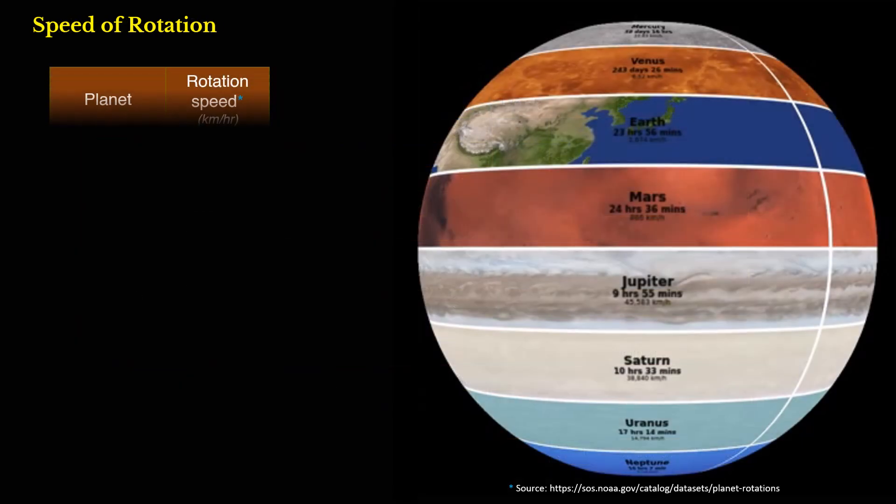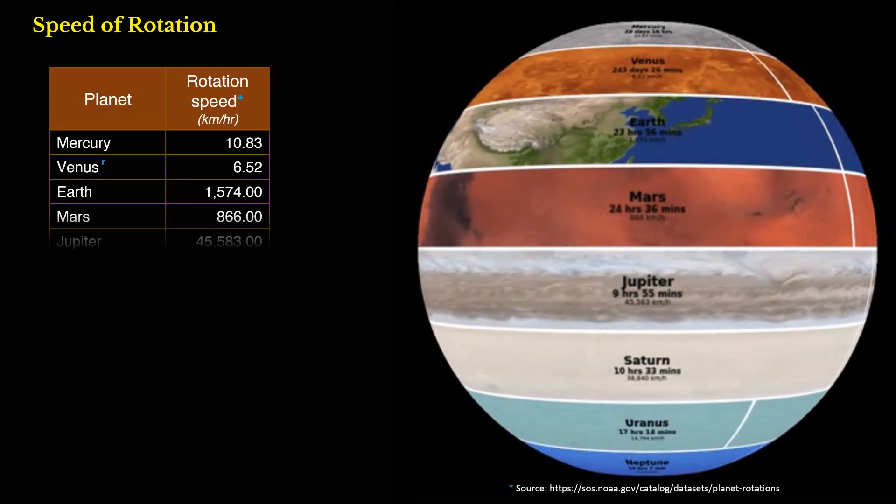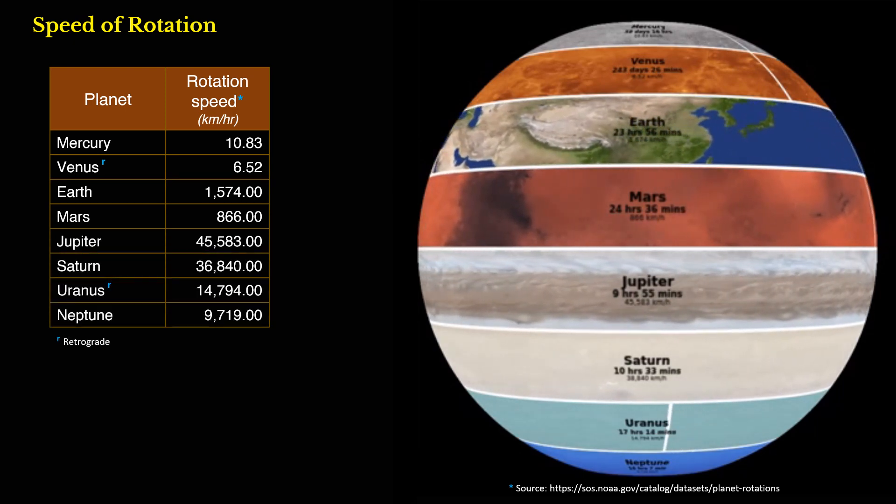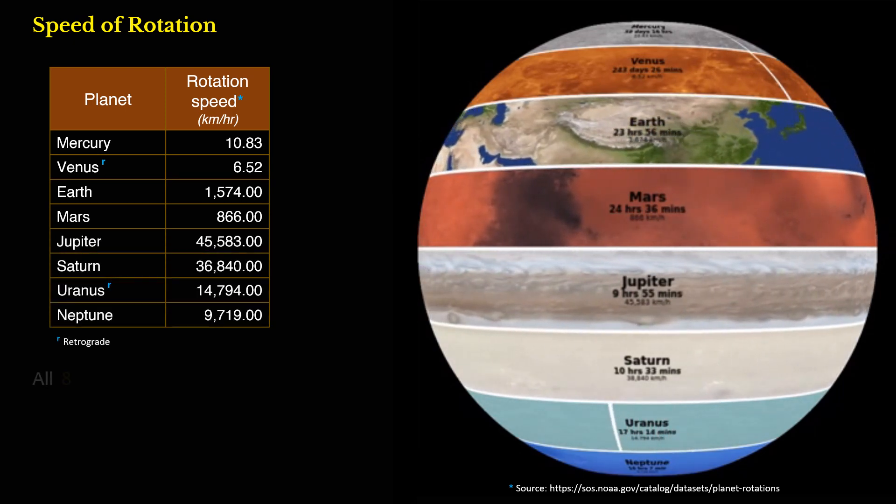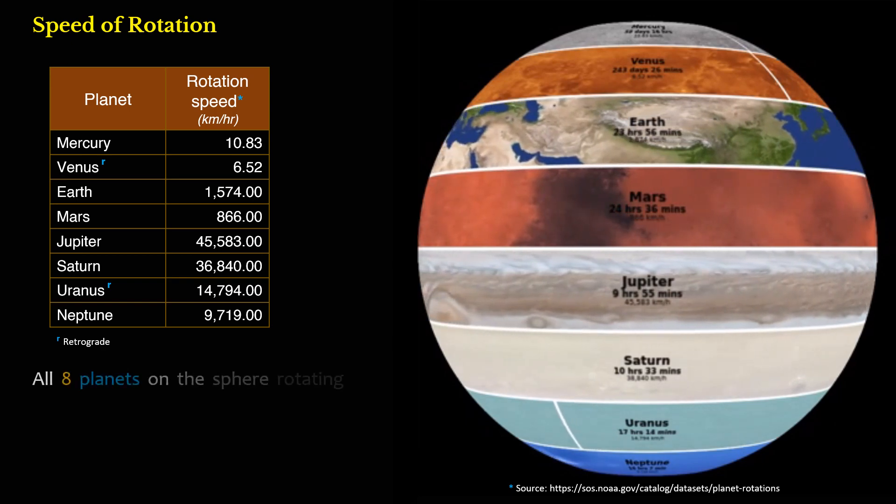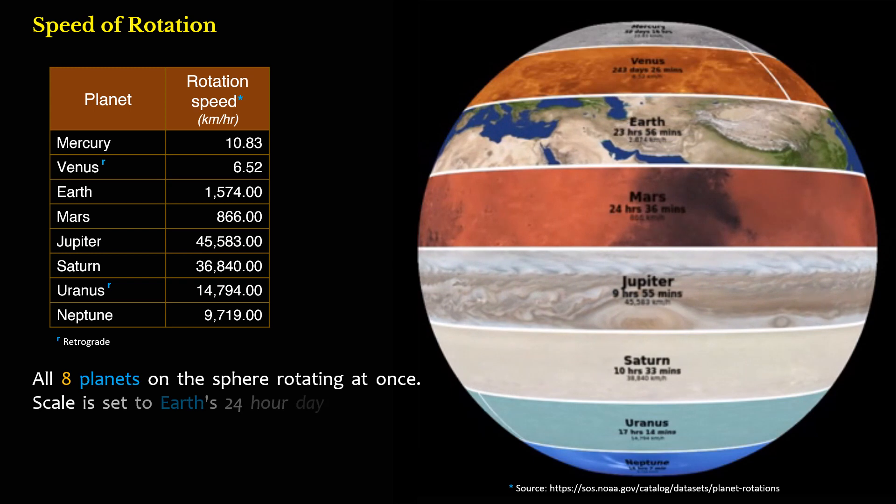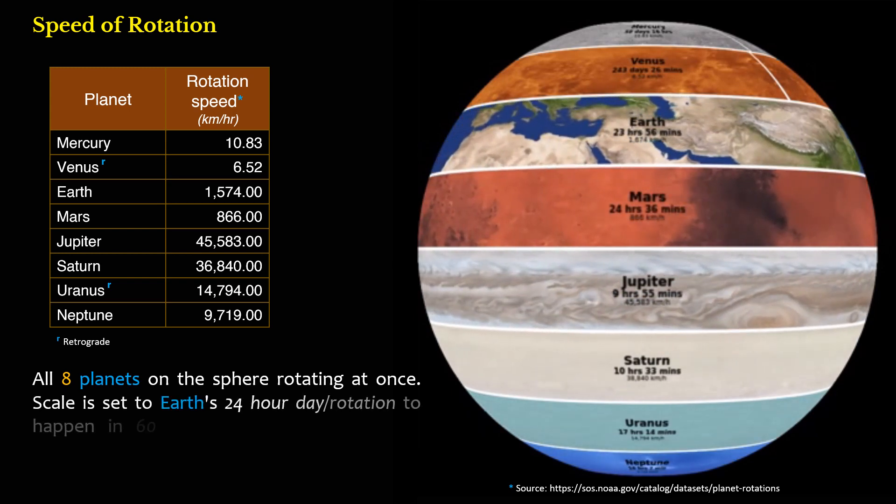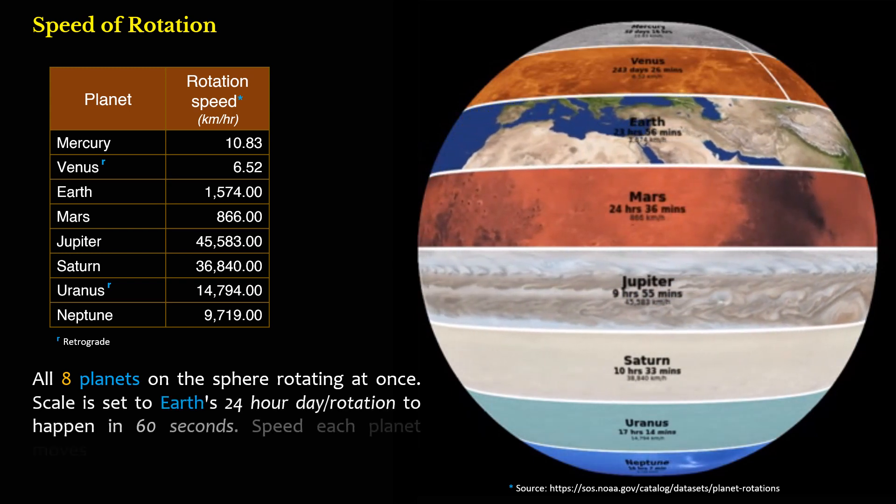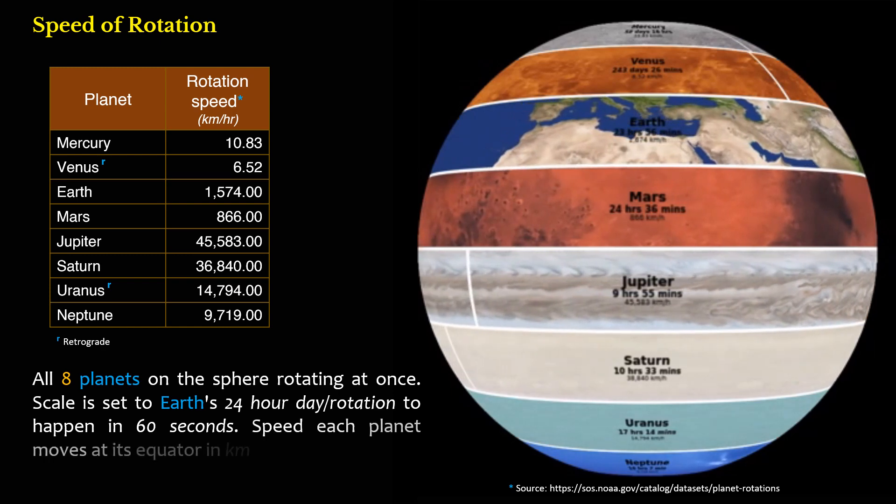Speed of Rotation. All eight planets on the sphere rotating at once. Scale is set to Earth's 24-hour day per rotation to happen in 60 seconds. Speed each planet moves at its equator in kilometers per hour.